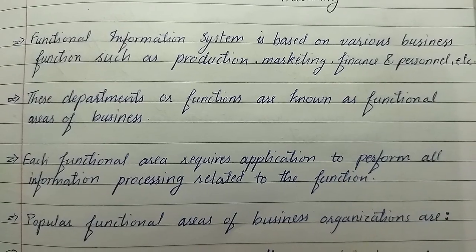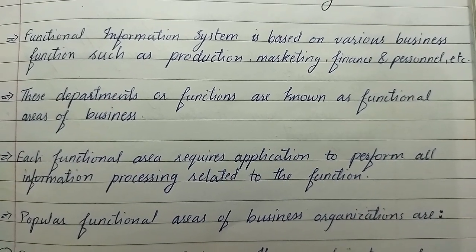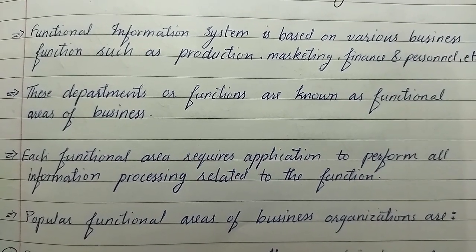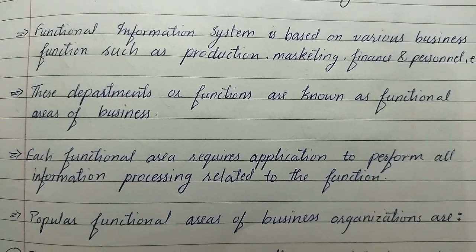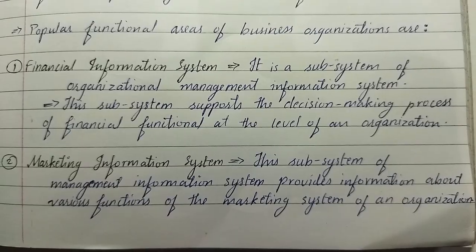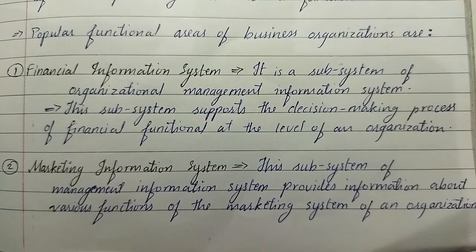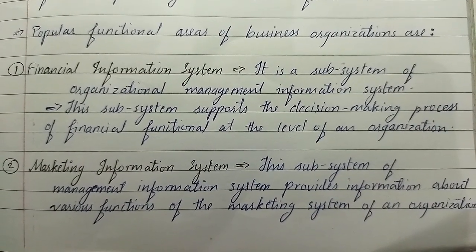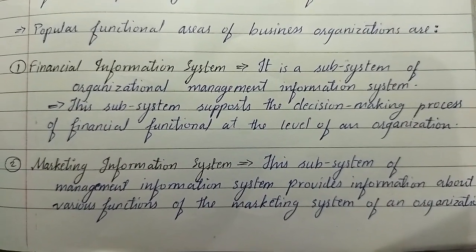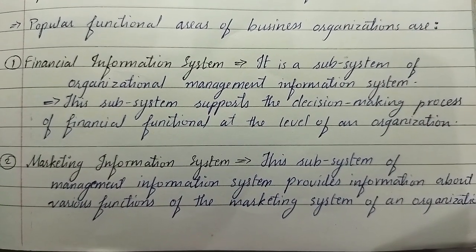A functional information system is based on various functions such as production, marketing, finance, and personnel. These departments are known as functional areas of business, and each functional area requires an application to perform all information processing related to the function. The first popular functional area is the financial information system, which is a subsystem of the organizational management information system. This subsystem supports the decision-making process of the financial functional area at the level of an organization.